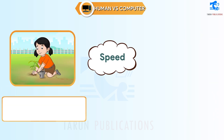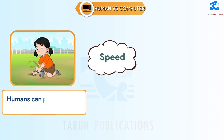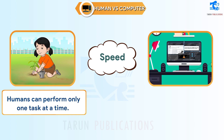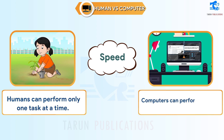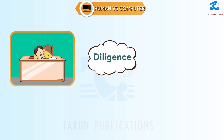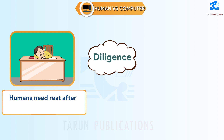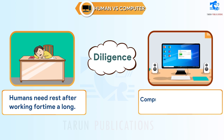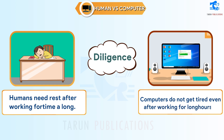Speed: Humans can perform only one task at a time, whereas computers can perform multiple tasks at a time. Diligence: Humans need rest after working for long, but computers do not get tired even after working for long hours.